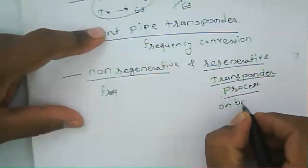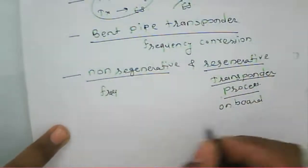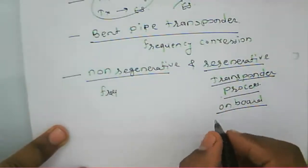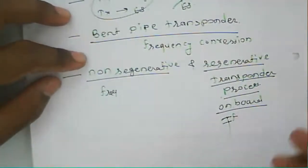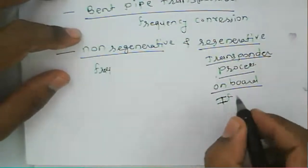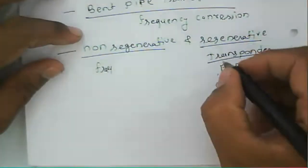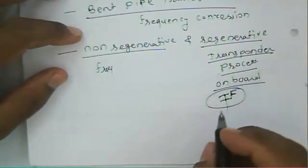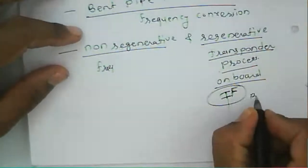In the regenerative type, there are onboard processing units. These onboard processors have intermediate frequency (IF) components for switching channels or changing the baseband signal required for transmission. So the regenerative transponder processes the signal using onboard processors with separate IF for switching channels and baseband signal switching.